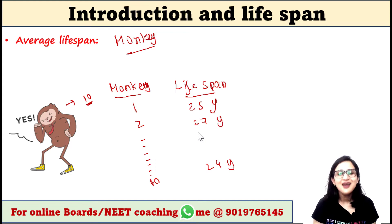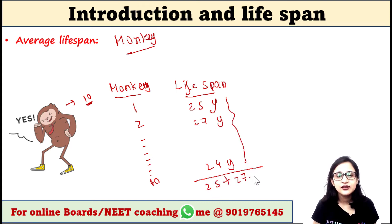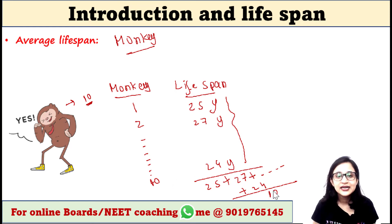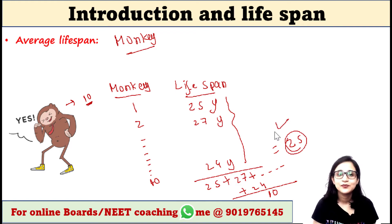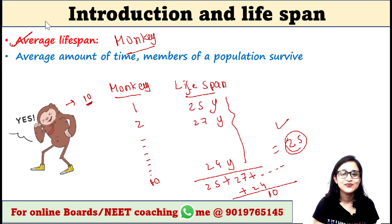Now just take the average of these. You add each of their lifespans — 25 plus 27 plus all the others plus 24 — and then divide the whole value by the total number of monkeys considered, which is 10. Let's say we get the average value of 25. So this is the average lifespan of the monkey. The average amount of time members of a population survive is called average lifespan.